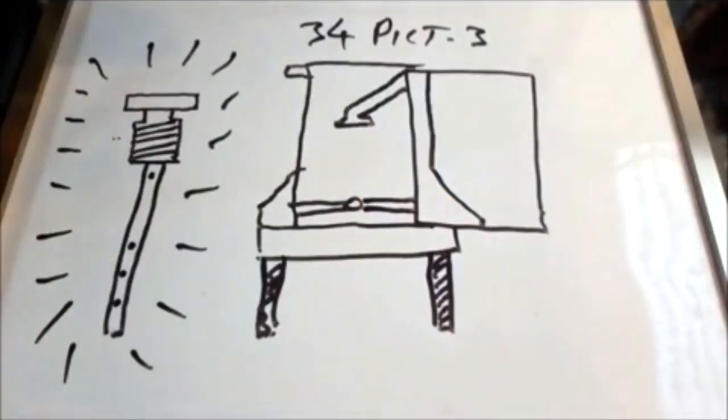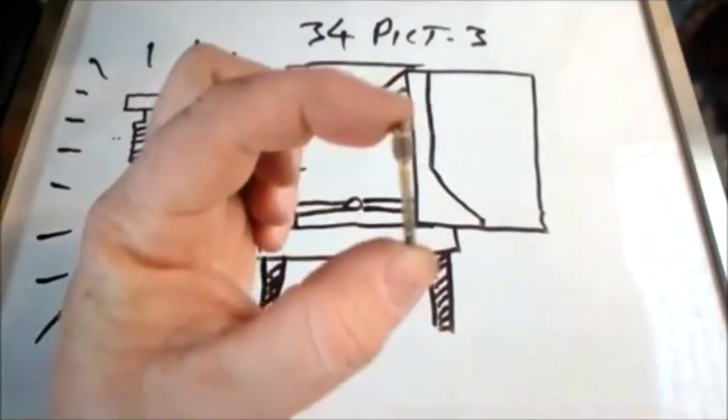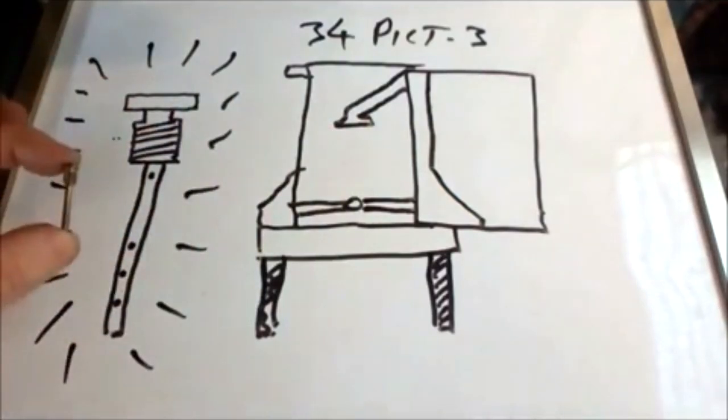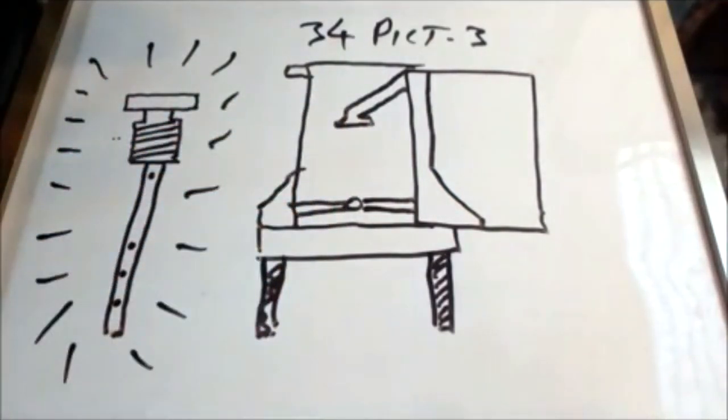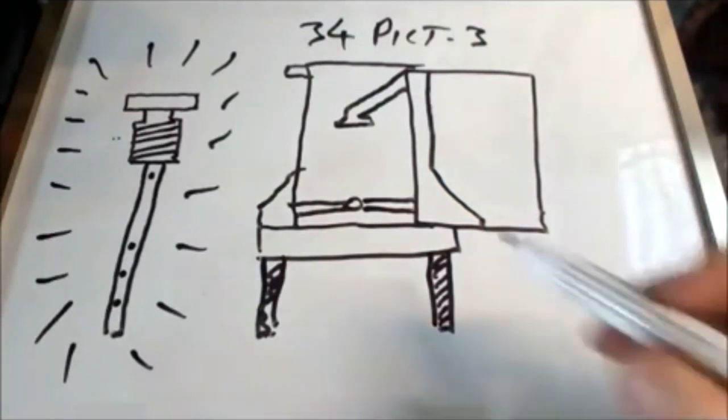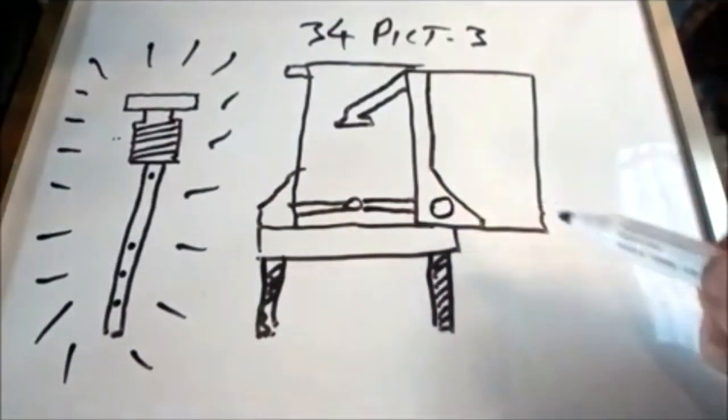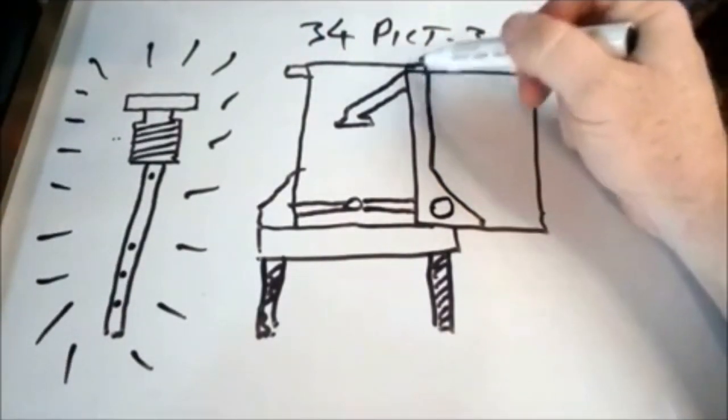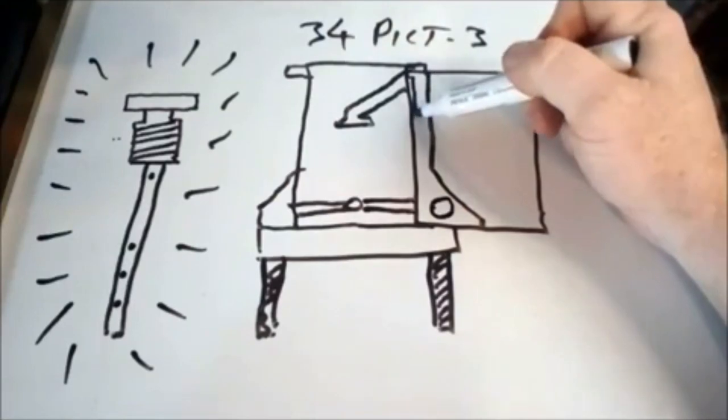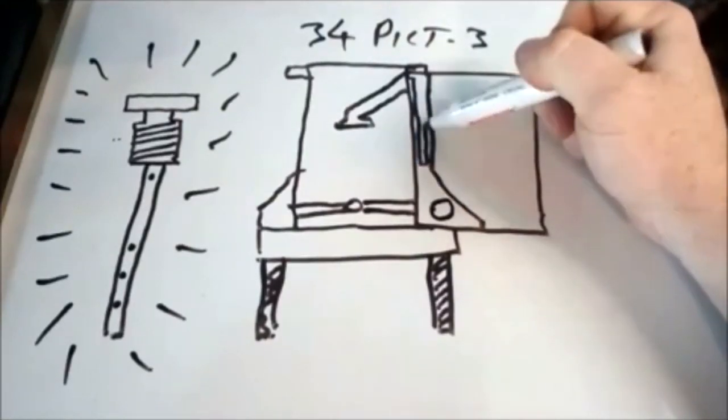So that's our emulsion tube which I've now drawn over here. This is a basic view of the 34 PICT. You would have a jet here and our actual emulsion tube screws in here like this. It comes down there like that.